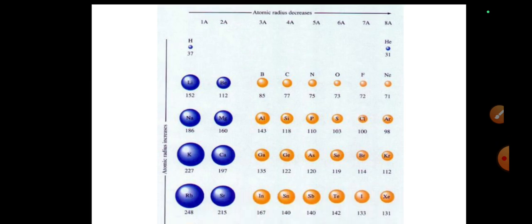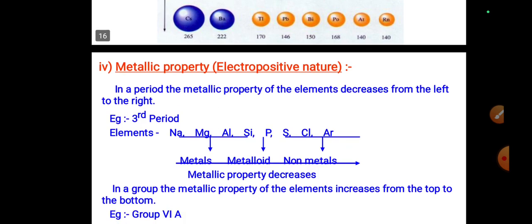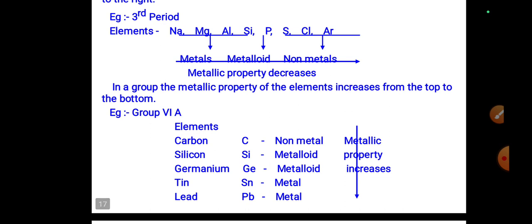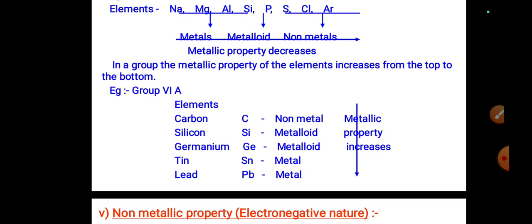Metallic property (electropositive nature): in a period, the metallic property of elements decreases from left to right. For example, in the third period — sodium and magnesium are metals; silicon and phosphorus are metalloids; sulfur and chlorine are non-metals; and argon is an inert gas with a complete octet.